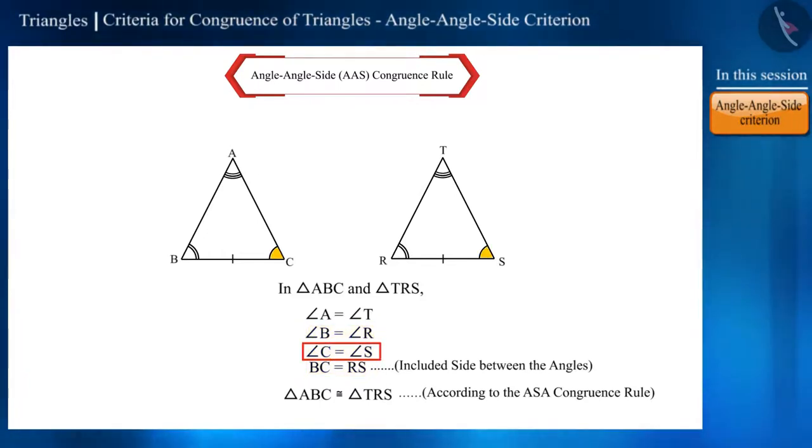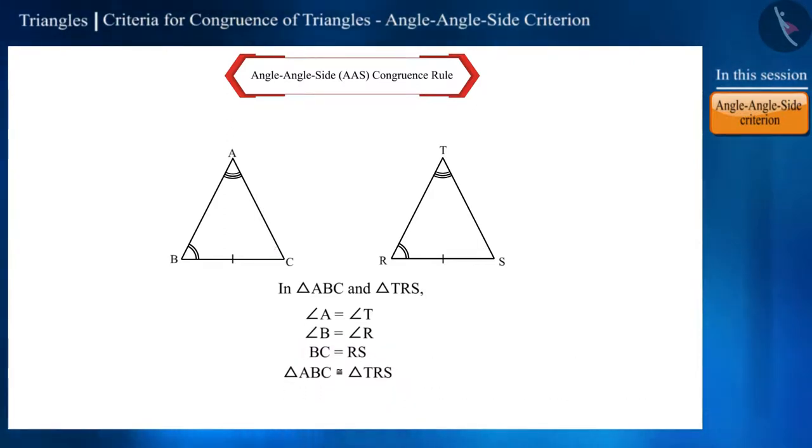If we are not given any information about this angle, then how can we check the congruence of these two triangles? We can clearly see here that angle A is equal to angle T, angle B is equal to angle R.